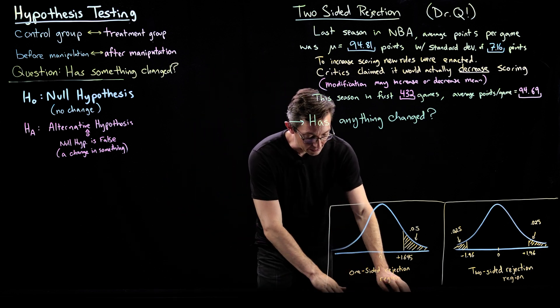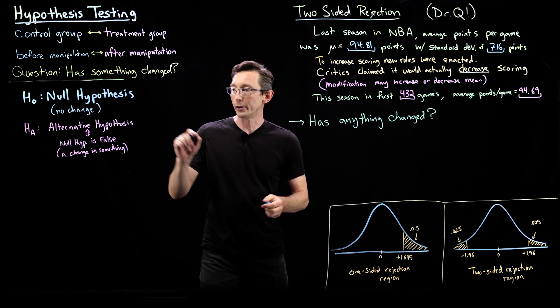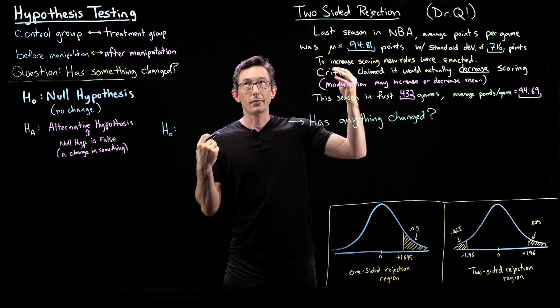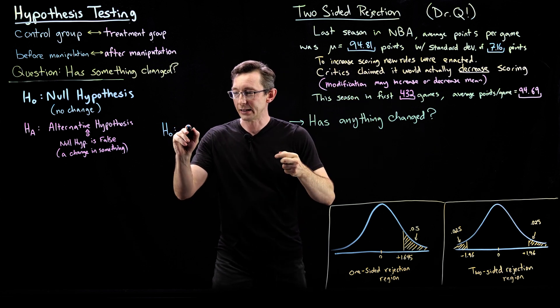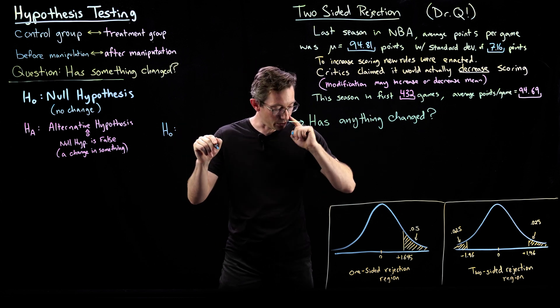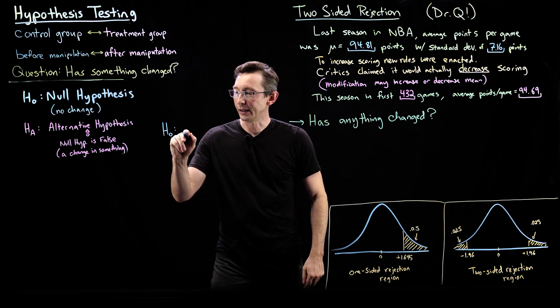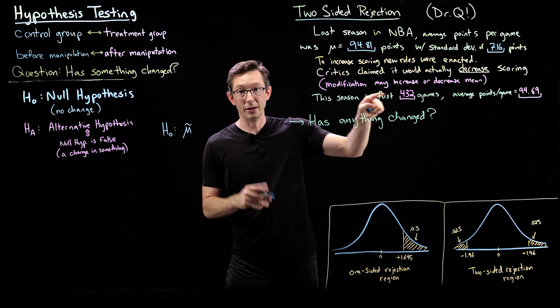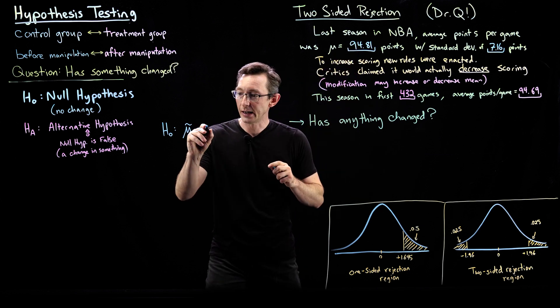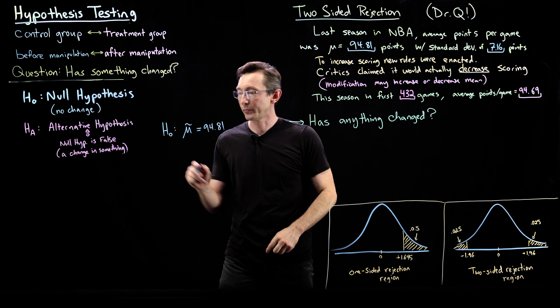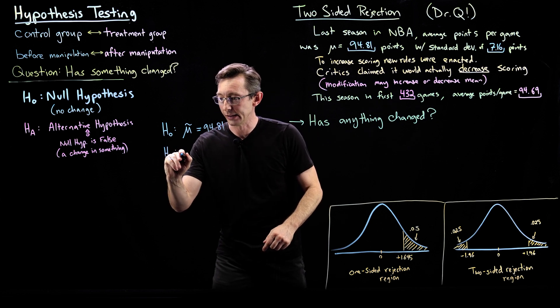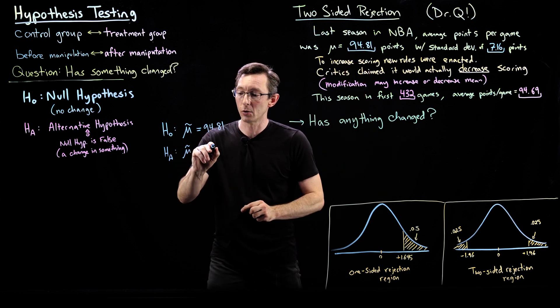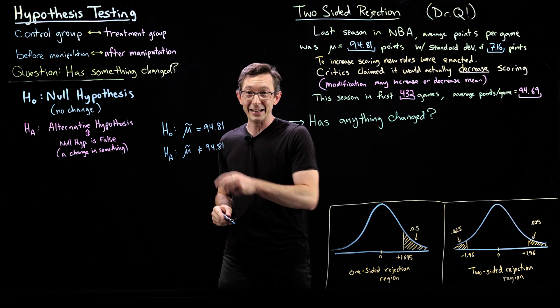Let's write down the null hypothesis. Generally we always write down the null hypothesis. H null is that the new mean, I'll call it mu tilde, the mean from this season, equals the old mean which is 94.81. The alternative hypothesis is that the new mean has changed. It's not equal to the old mean. It might be higher or lower. The average scoring may be higher or lower, but it's not equal to the old mean.